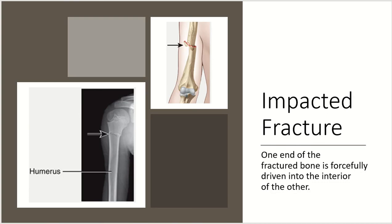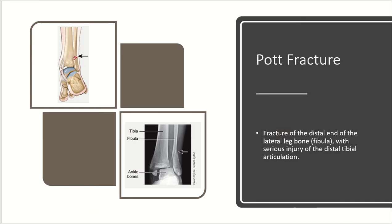Next we have the impacted fracture, when one end of the fractured bone is forcefully driven into the interior of the other bone — it's just been driven up and crunched into the upper side of that bone.